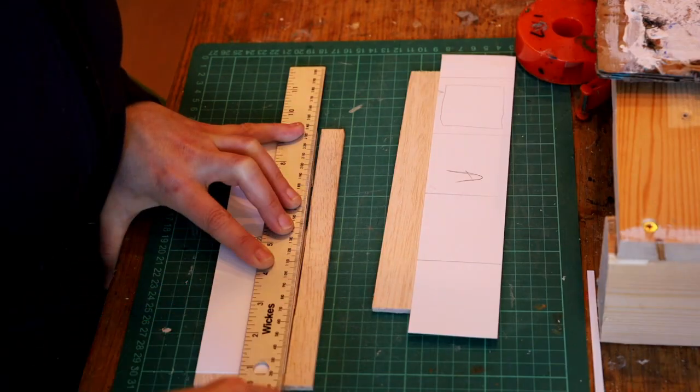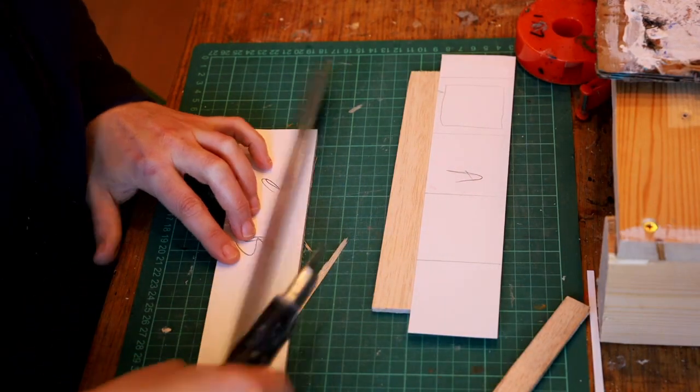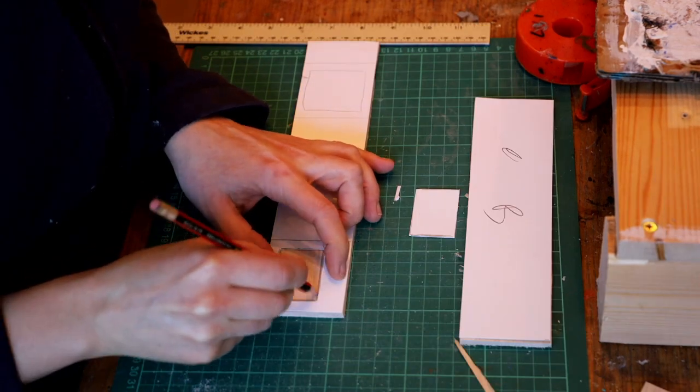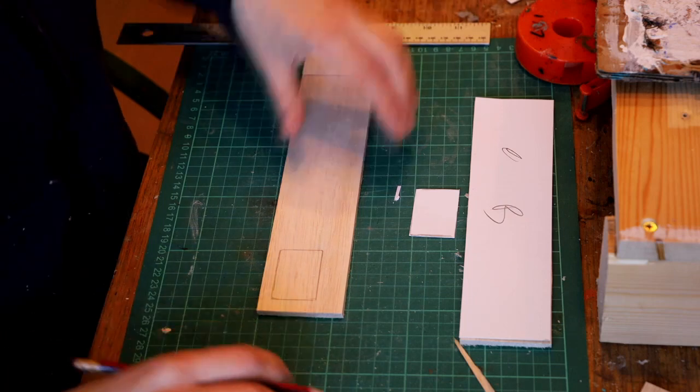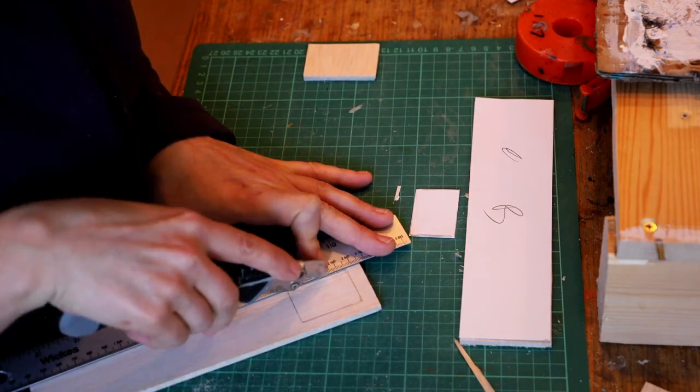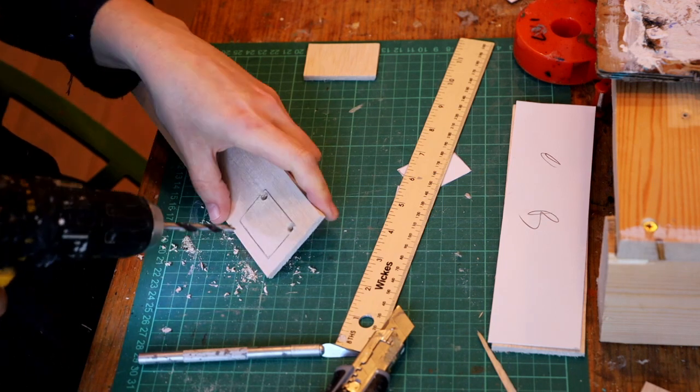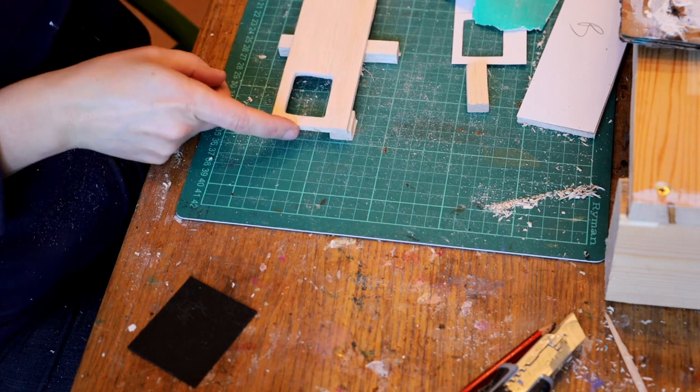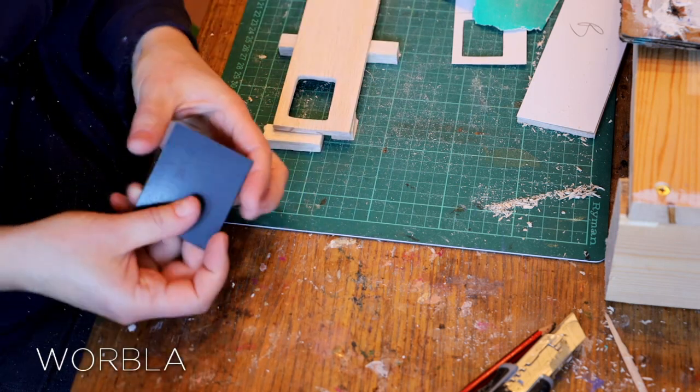For the worktop I've used some balsa wood that I cut to size and cut out the sink opening. First I cut out with an Xacto blade, then used a drill bit to help open it further, and then I sanded it down.